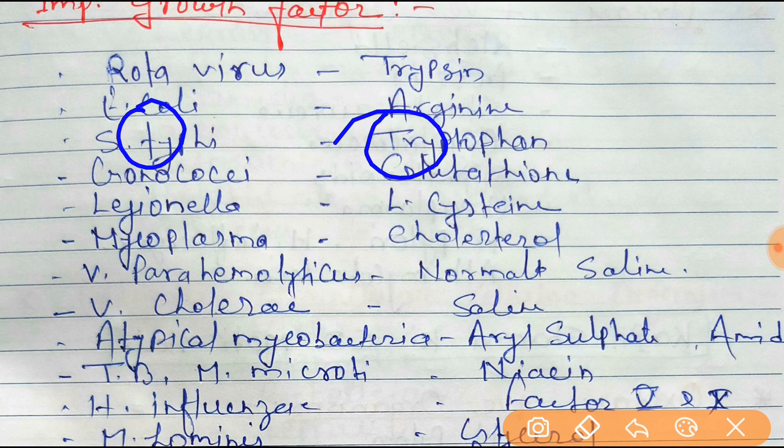Next one is Gonococci. The growth factor for Gonococci is glutathione. Both the first letters are G — Gonococci and Glutathione both start with G, making it easy to remember.